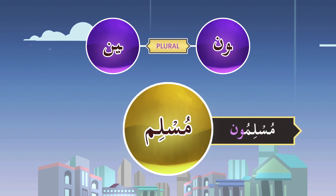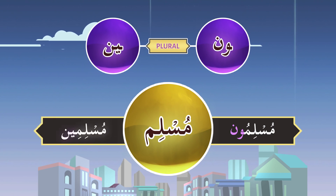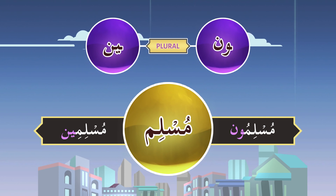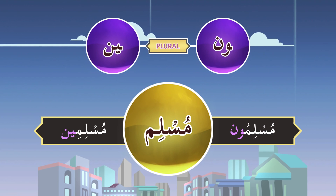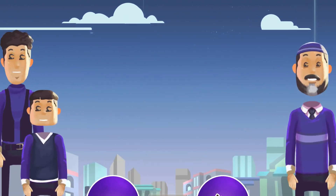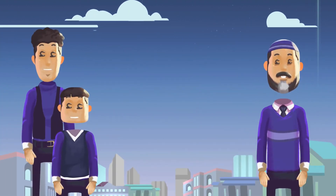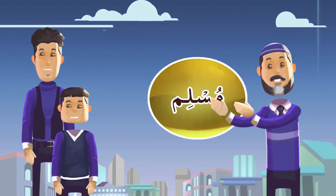The plural of 'Musliman' or 'Muslimin' is 'Muslimin'. But in brief, if I say plural of 'Muslim', you can say it is 'Muslimun' or 'Muslimin'. So can you give me the plural of some of these words?